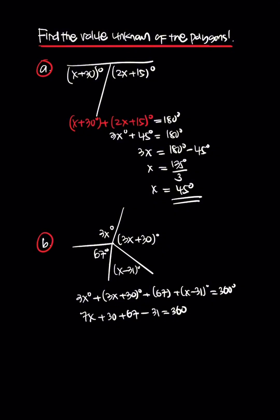Doing the calculation, this turns into 7x plus 97 minus 31 equals 360. Then 7x equals 360 minus 66, so this is 294 degrees divided by 7, which is 42 degrees.